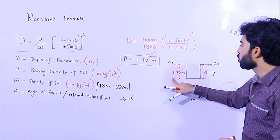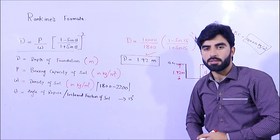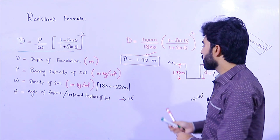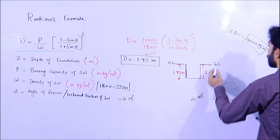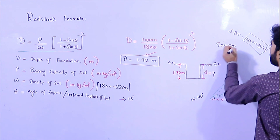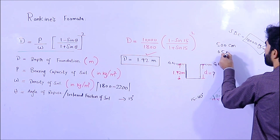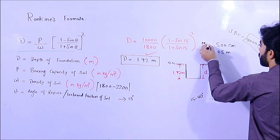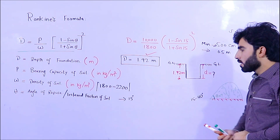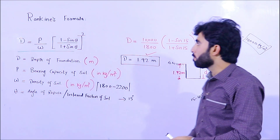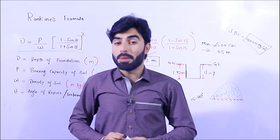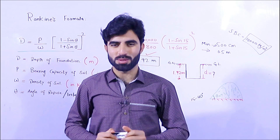Now, what is the minimum depth of foundation by standard? The minimum depth of foundation should not be less than 0.5 meters (500 millimeters) as per IS code. This is the minimum depth — it should not go below that. So that covers Rankine's formula to calculate the depth of foundation. I hope this video helps you. Thanks for watching, see you in the next video, goodbye.